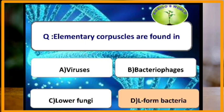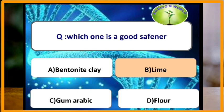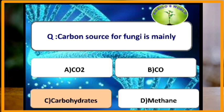Elementary corpuscles are found in the L-form of bacteria. Which compound is known as the drug of the century? LSD — lysergic acid diethylamide — is known as the drug of the century.